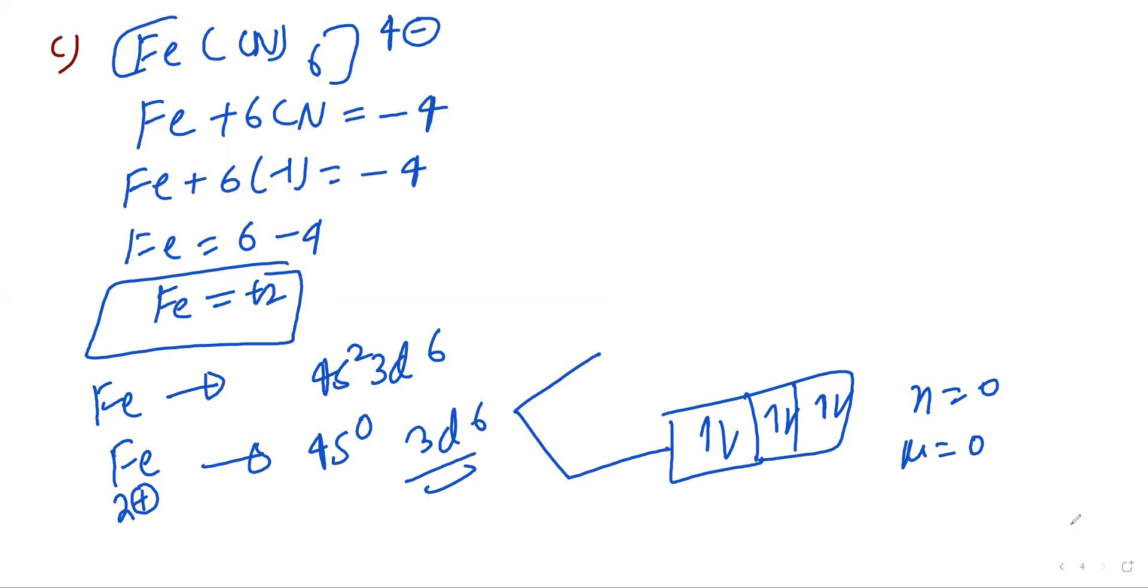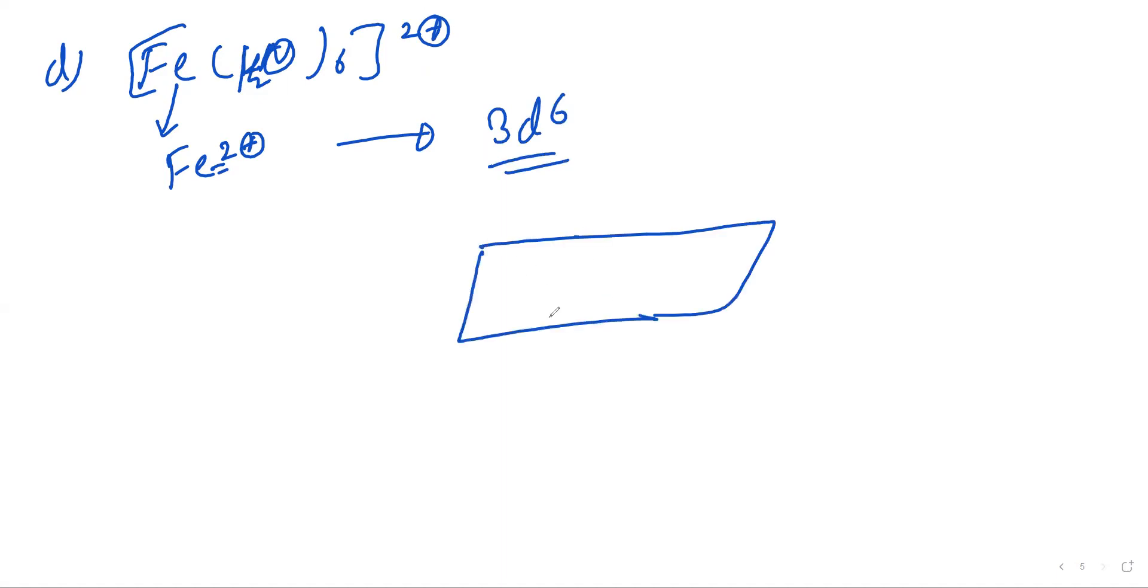Next is Fe(H2O)6 2 plus. Six electrons, weak field ligands. Total how many orbitals? One, two, three, four, five. And one is paired. So unpaired is four.